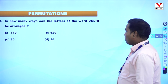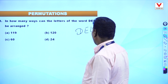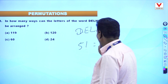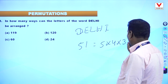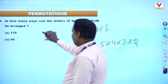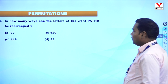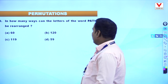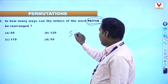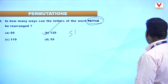Question 8: How many ways can the letters of the word Delhi be arranged? Delhi has letters D, E, L, H, I — 5 letters. So 5 factorial = 5 into 4 into 3 into 2 into 1. 5 times 4 is 20, times 3 is 60, times 2 is 120. Option B is correct. Question 9: How many ways can the letters of the word Patna be arranged? Patna has 5 letters, so 5 factorial = 120. Option B is your answer.